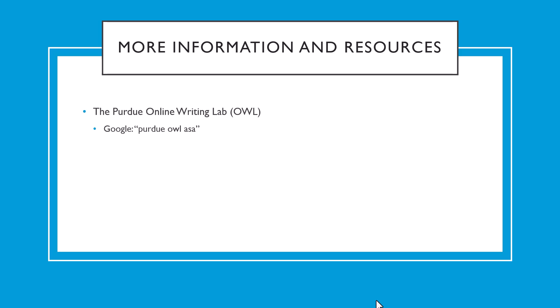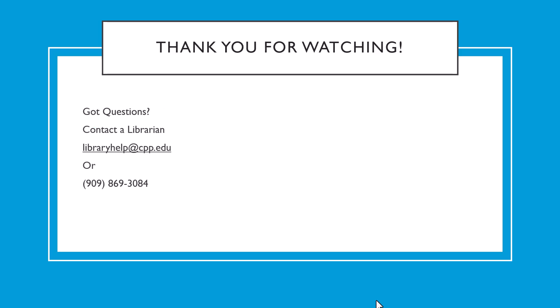Obviously, there are a lot more types of sources to cite than just articles, and there are a lot more situations for citing articles than we've covered in this brief video. If this video didn't answer your question, there are more resources available to help you cite your work. The Purdue Online Writing Lab, or OWL for short, provides an excellent website covering many different scenarios and rules for ASA citation — simply type Purdue OWL ASA into Google or the search engine of your choice. Finally, you can always contact a librarian for citation assistance. You can email us at libraryhelp at cpp.edu, or call the reference desk at 909-869-3084. Thank you for watching.